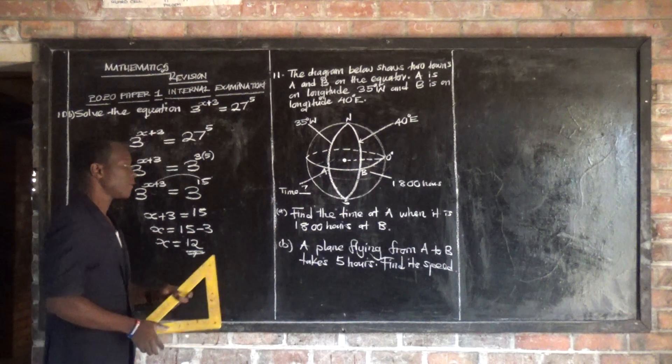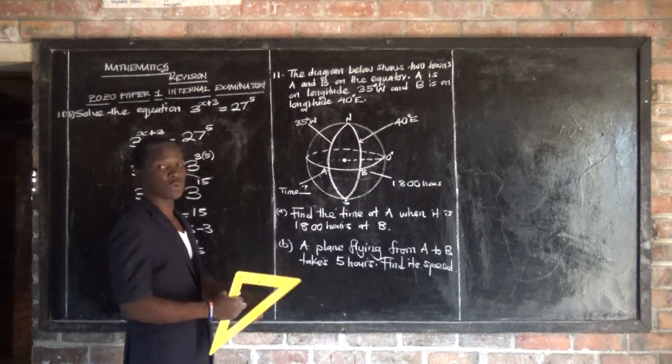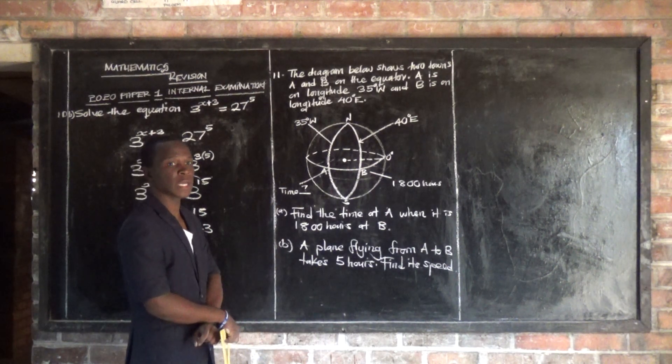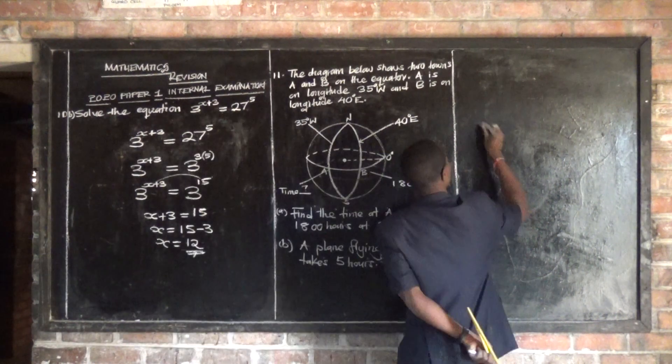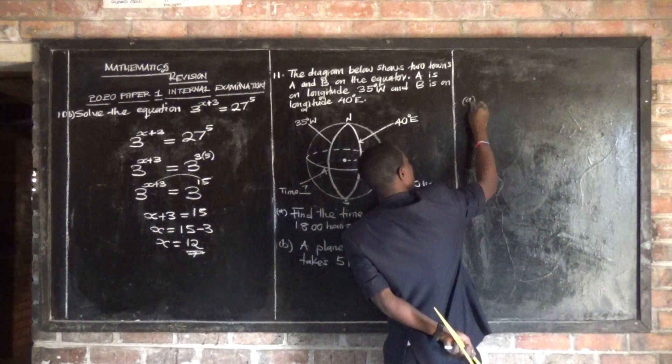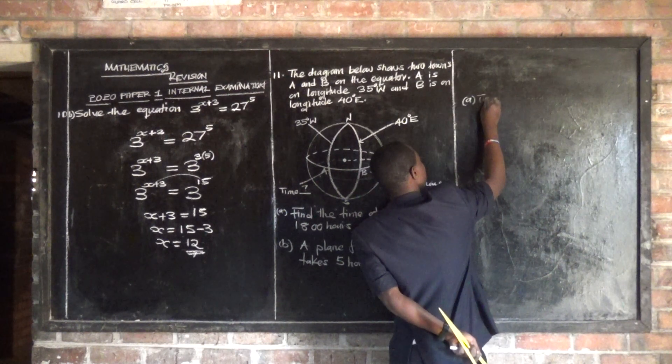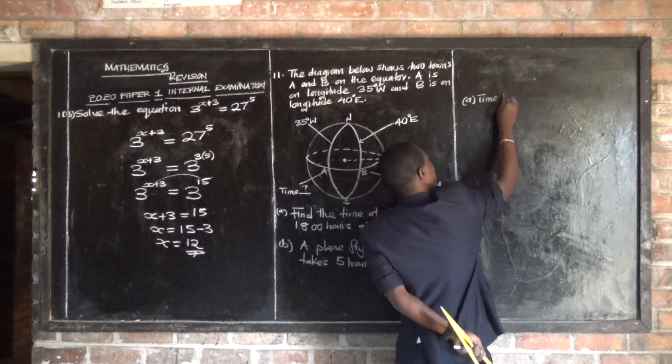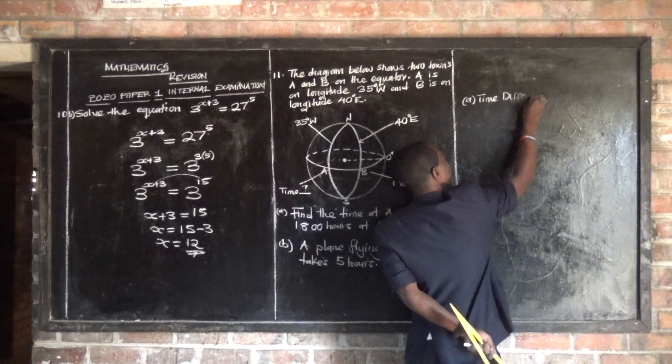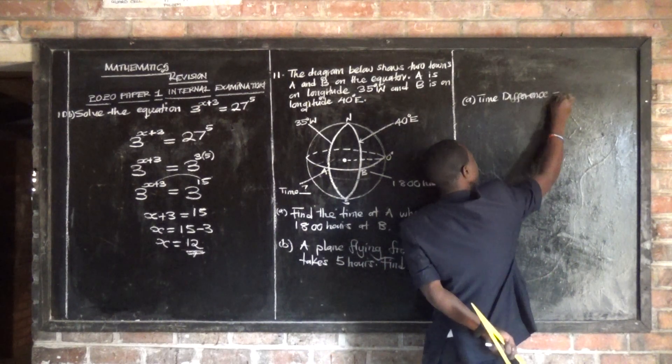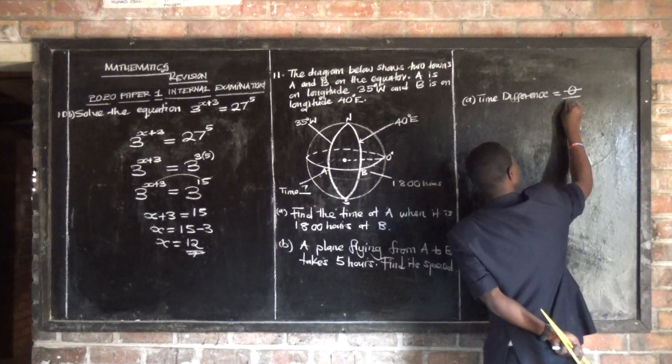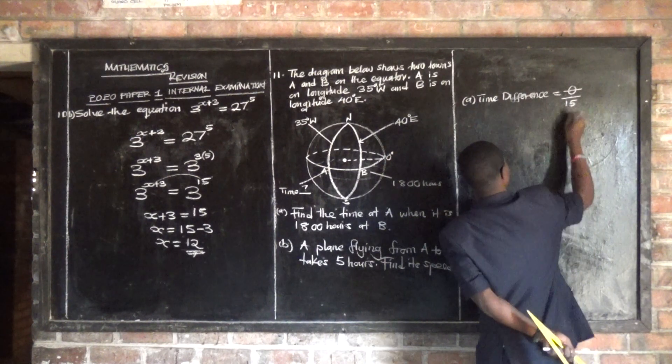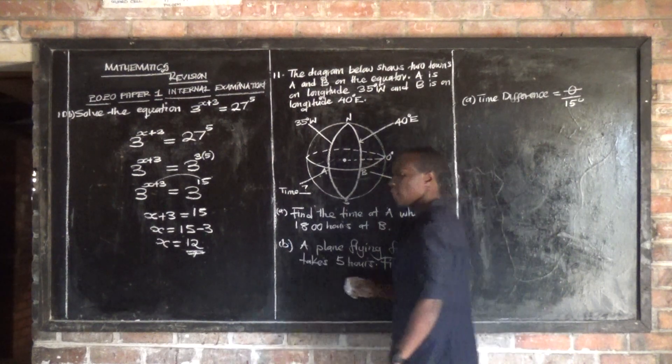Step number 1, first and foremost, you need to find what to call the time difference. So let's find the time difference between A and B. Time difference is given by theta divided by 15. 15 degrees.